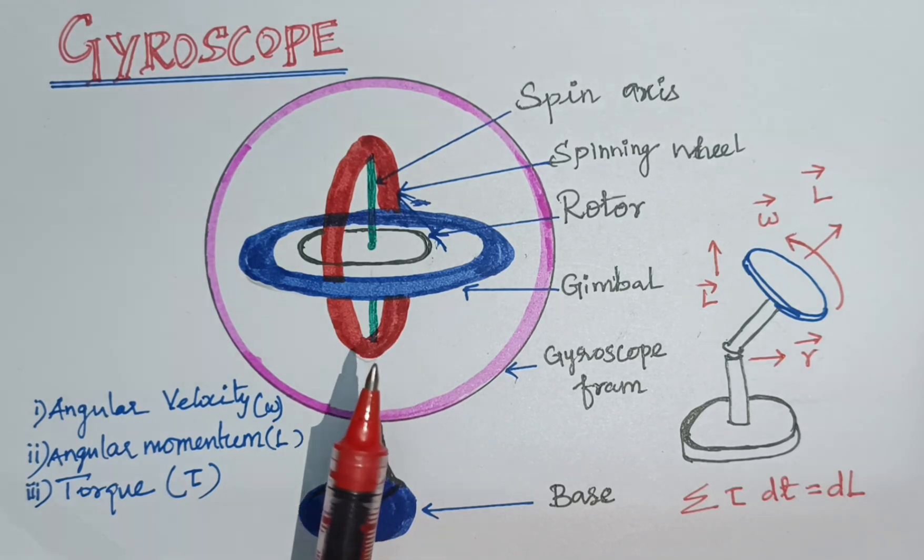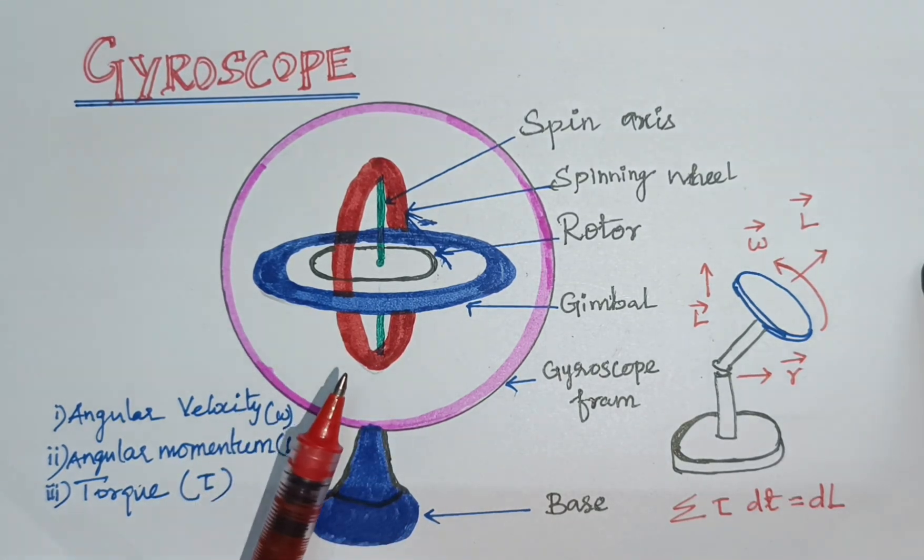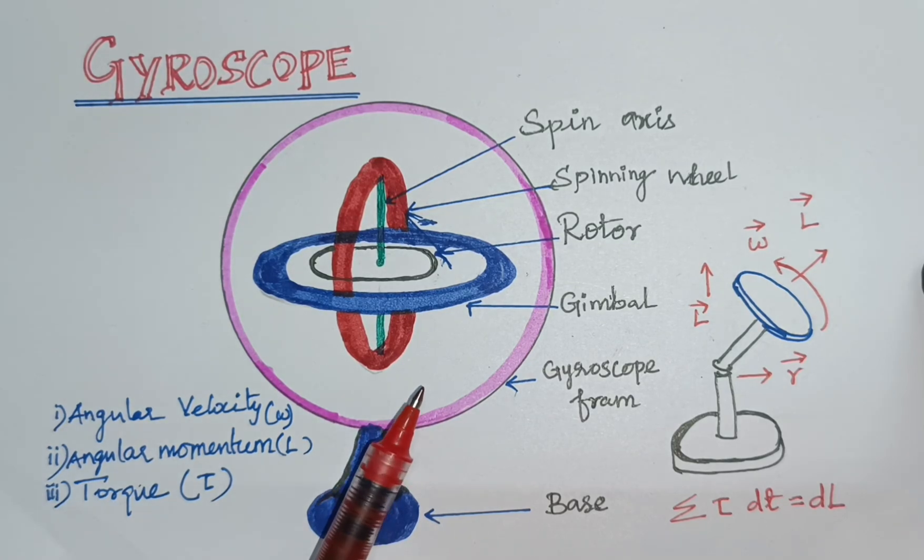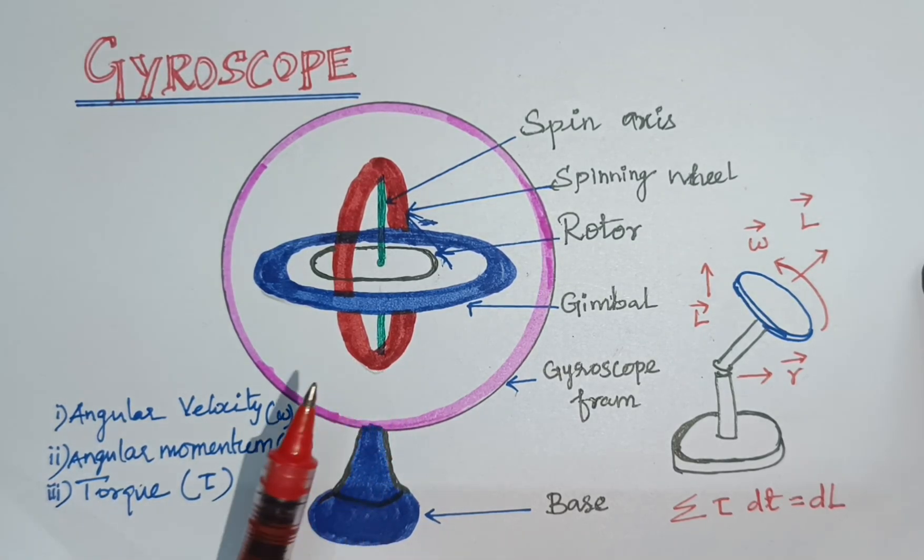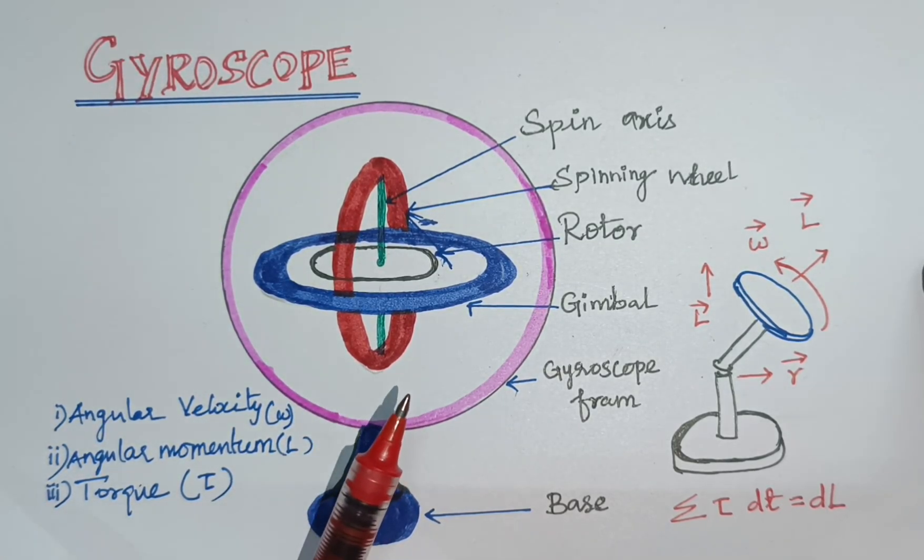Gyroscope has various types: mechanical gyroscope, optical gyroscope, gas bearing gyroscope.